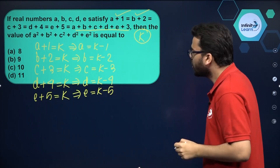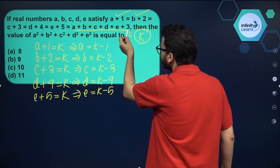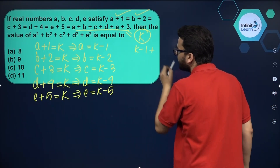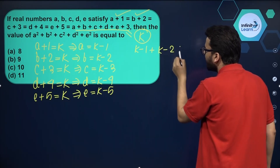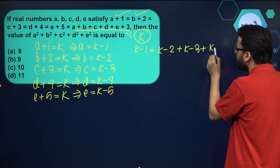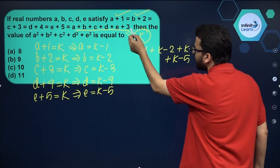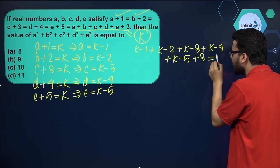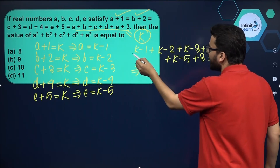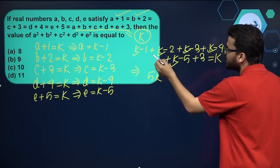Now, a + b + c + d + e + 3 is also equal to k. So substituting: in place of a put k − 1, b put k − 2, c put k − 3, d put k − 4, e put k − 5, and plus 3 — this whole expression is also equal to k. Counting the k terms: 1, 2, 3, 4, 5 — so 5k appears on the left side.